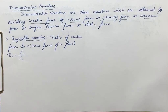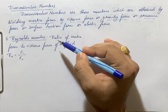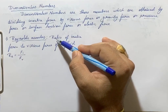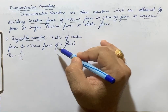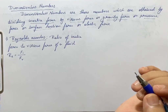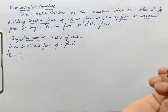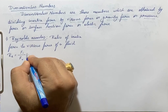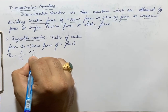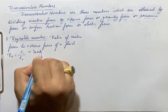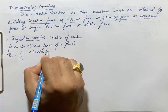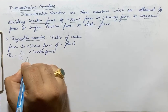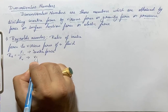First we are going to study about Reynolds number and its significance. The definition of Reynolds number is the ratio of inertia force to viscous force of a fluid. Here Fi is the inertia force and Fv is the viscous force.